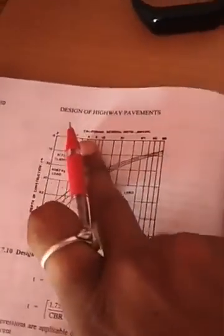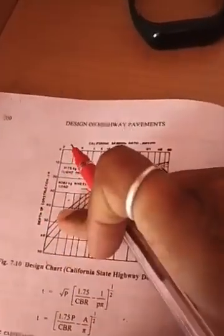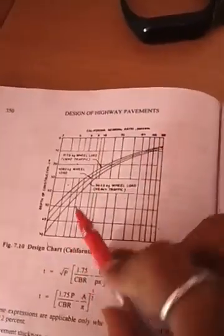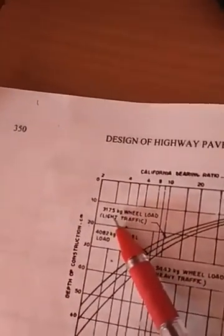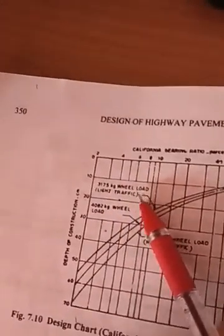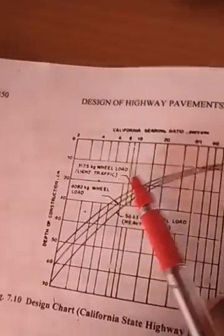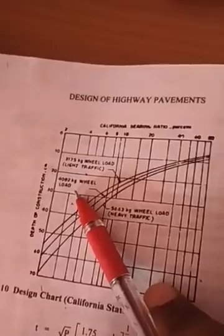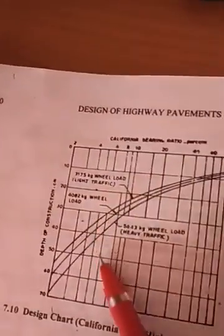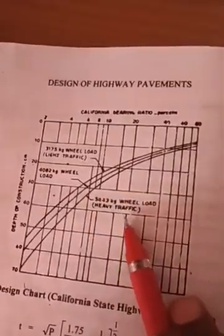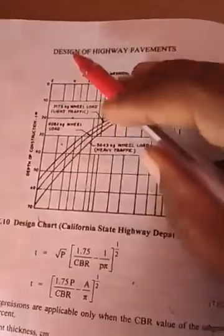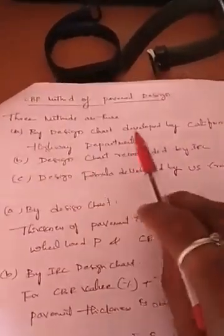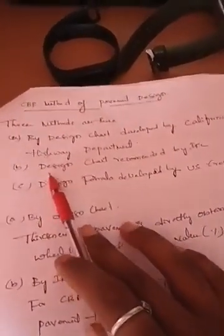On the x-axis we have the CBR value of the subgrade, and on the y-axis we have depth of construction or thickness of the pavement. There are three curves. The first curve is for a wheel load of 3175 kg or less, which is considered light traffic. The second curve is for medium traffic with a wheel load of 4082 kg. The third curve is for heavy traffic with a wheel load of 5443 kg. Depending on the CBR value and the traffic on the road, you directly get the thickness of the pavement using this design chart.